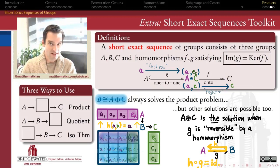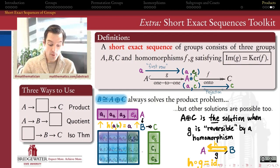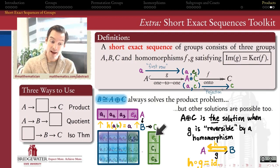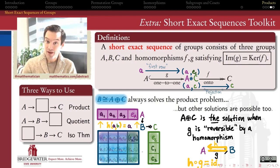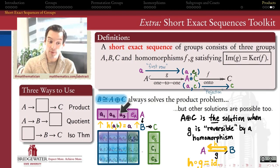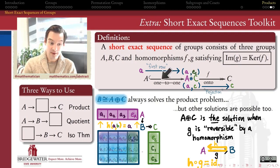When we're using a short exact sequence of groups to solve a product problem — a problem in which I know a subgroup that I want to realize inside of my group and I know the cosets that I want that subgroup to have — how do I figure out the group itself? We've just seen that the external direct product is one way of solving that product problem. In this video, I want to convince you that that's not the only way to make a product of A with C.